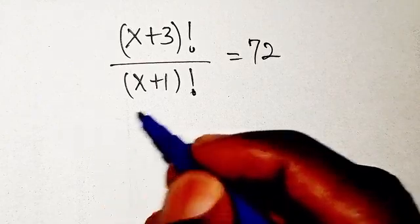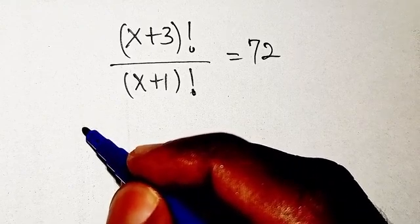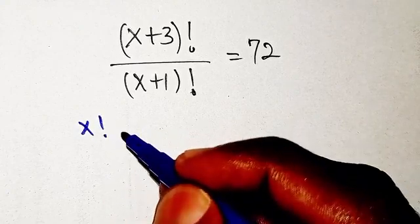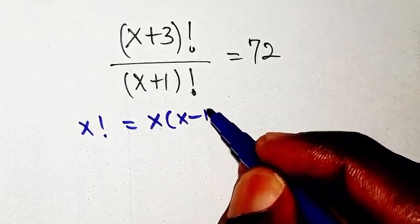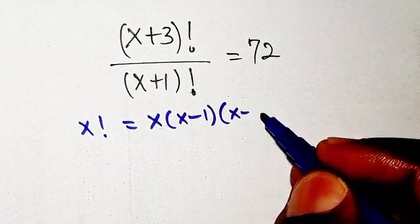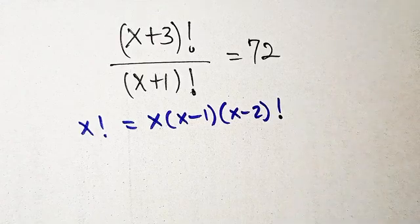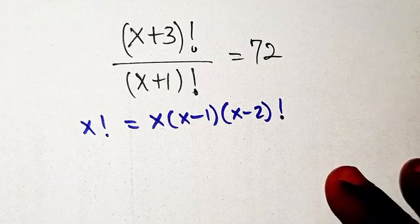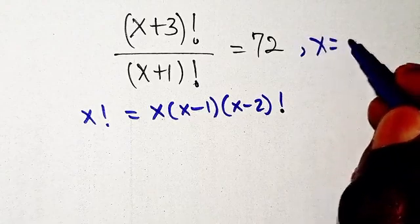A property of the factorial function: when you have something like x factorial, x factorial is going to give us x, then x minus one, then x minus two, and so on. You keep deducting one from it and it goes on like that.